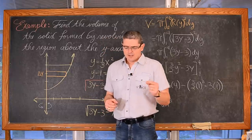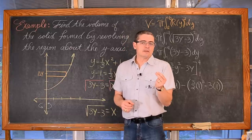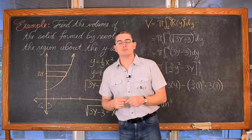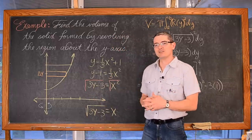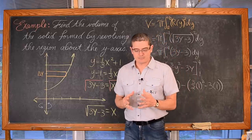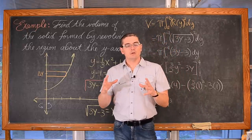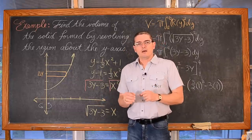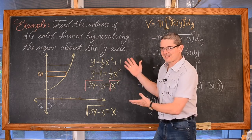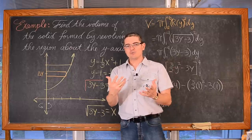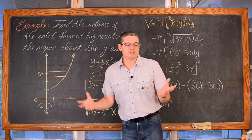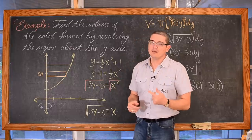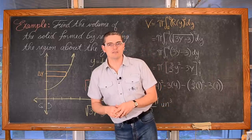In our second example there will be a small advantage — or maybe a big advantage — to doing the shell method, because the next example is going to require the use of the washer method, which will complicate the work just a little bit. I'm going to pull a clip from an old video when I taught how to find the volume using the disk/washer method, and then we'll come back and do the same example using the shell method. If you want to skip the disk method, I have timestamps to all my examples down in the description — just click to the next example.